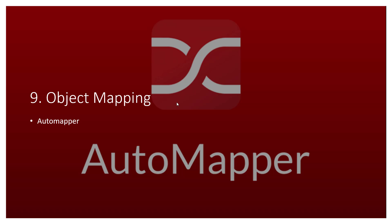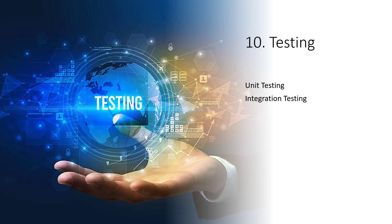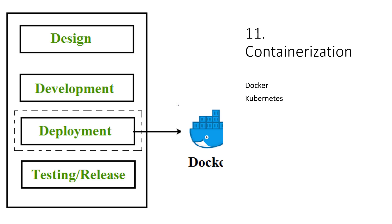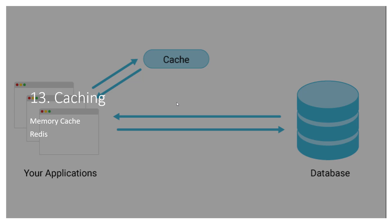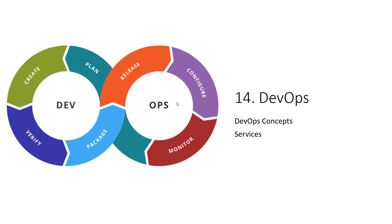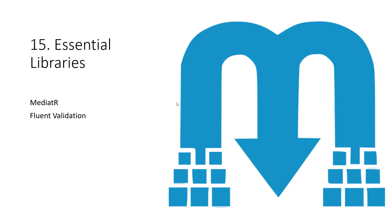Number nine is AutoMapper — you'll learn about map profiles and IMapper. Number ten is testing — unit testing and integration testing using NUnit and MSTest. Number eleven is containerization: Docker and Kubernetes. Number twelve is background tasks like background services and Hangfire. Number thirteen is caching: in-memory cache and Redis cache. Number fourteen is DevOps — DevOps concepts and CI/CD pipelines. Number fifteen is essential libraries like MediatR, fluent validations, and CQRS patterns.